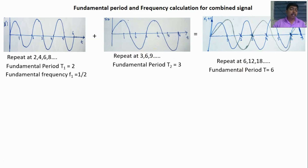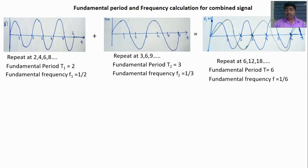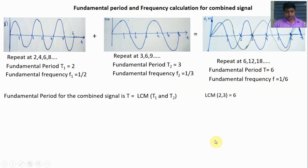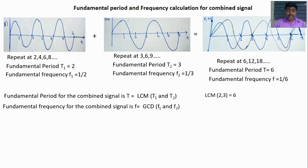Mathematically, the fundamental period for the combined signal is the LCM of the fundamental periods of each signal. LCM of 2 and 3 is 6. The fundamental frequency for the combined signal is the GCD (greatest common divisor) of the fundamental frequencies of x1 and x2. GCD of 1/2 and 1/3 is 1/6. For full details on LCM, go through the video attached in the description. You should remember this formula.